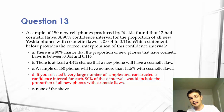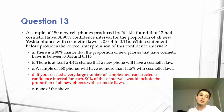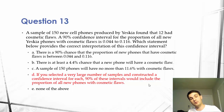So if you select a large number of samples, your confidence interval — at 90% confidence in this case — would include the proportion of all new phones with cosmetic flaws.